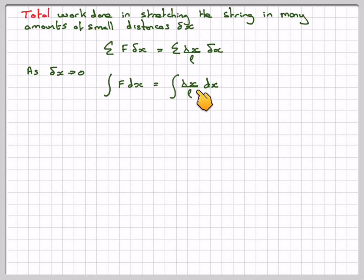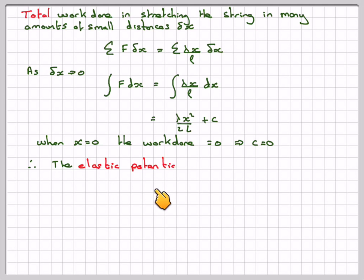Lambda and L are constants, x is a variable, and therefore that will become lambda x squared over 2L plus c. So when x is equal to zero, the work done will be zero, and therefore c is equal to zero.